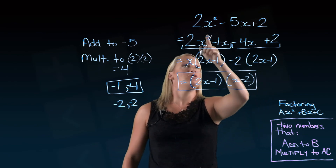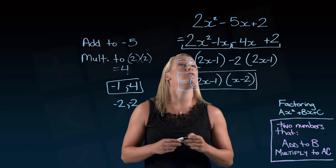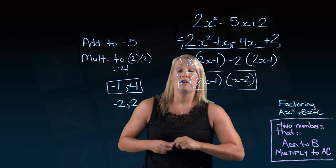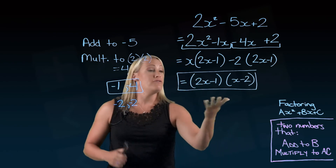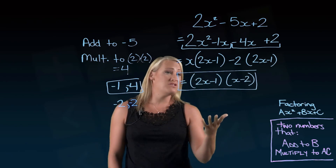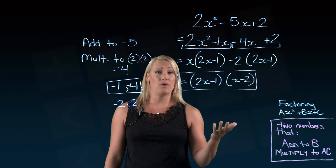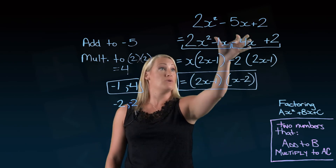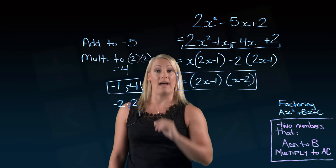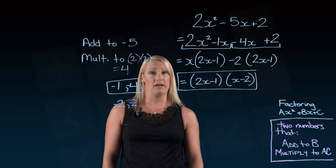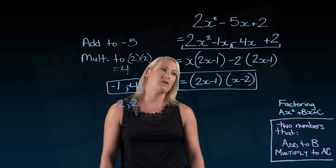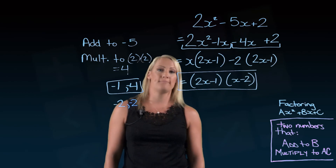That is 2x squared subtract 5x plus 2 factored. If you wanted to take a minute and do a check on that one, you totally could, and hopefully you would end up with the same final answer. Hopefully that clarifies it for you a little bit, guys.